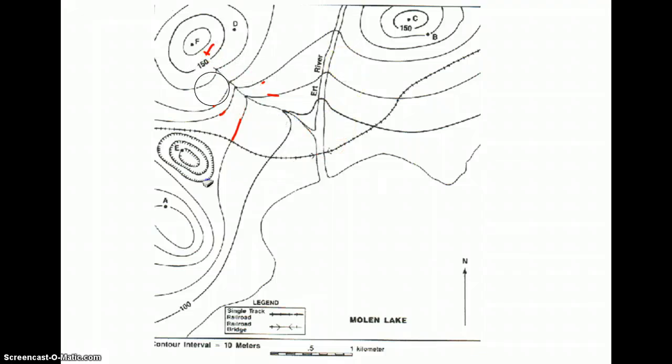The other way that you could determine the direction is by looking at the elevations of the contour lines. If this contour line is 150 meters and this contour line over here is 100 meters, we can also figure out which way the stream is flowing. Because we know that water can't flow uphill. So water cannot go from 100 meters up to 150. It has to be going down.